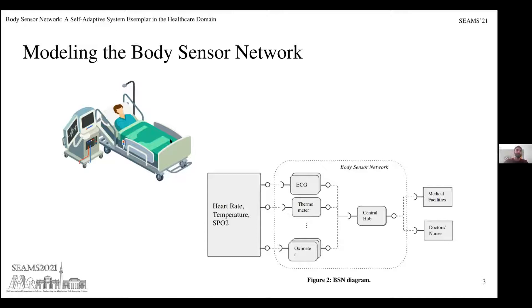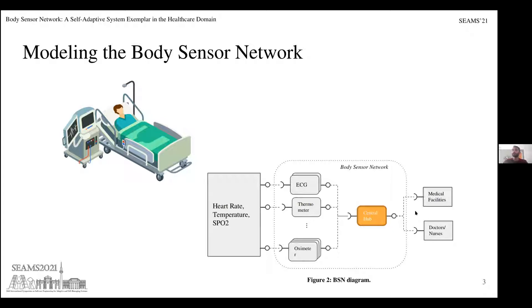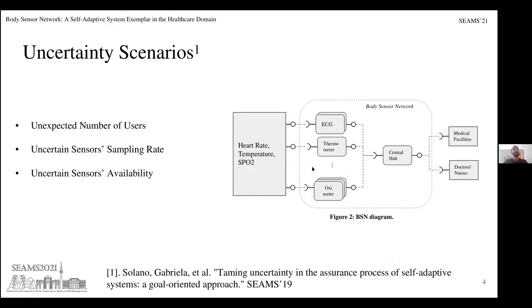To model and show what the BSN is, we use an ICU example where you have a patient modeled as a component providing heart rate, temperature, and pulse oximeter data. This data is collected by a set of sensors — for example, the ECG, thermometer, and oximeter — and sent to a central hub which processes the data and is able to detect whether there is an emergency with the patient. This emergency can then be sent to medical facilities, doctors, or nurses to act.